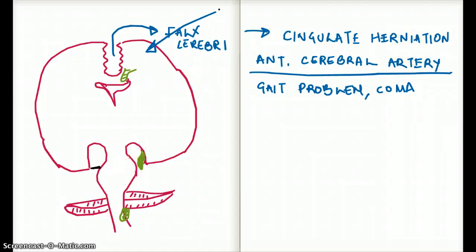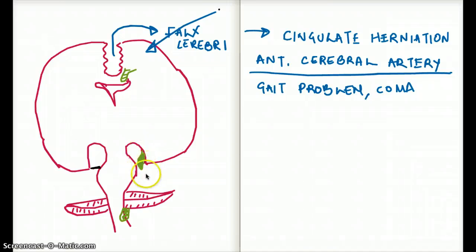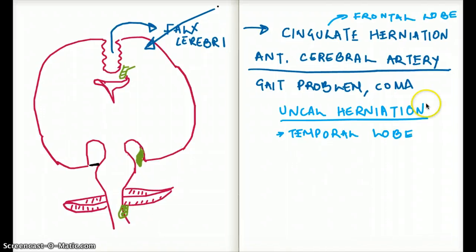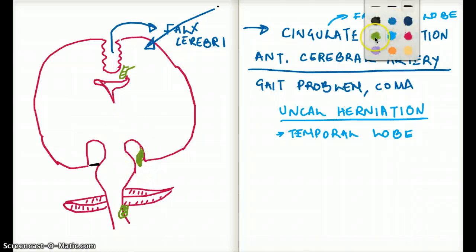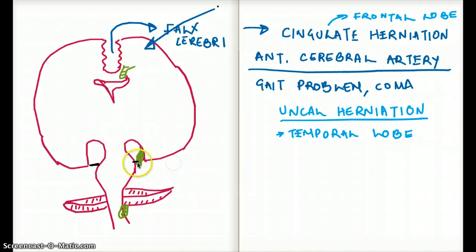Let's move on to uncal herniation. What exactly is the uncus? The uncus is a part of the temporal lobe, and it can herniate through the tentorium cerebelli. This is the temporal lobe herniation, as opposed to the frontal lobe herniation. There is a small structure called the tentorium cerebelli located right here.